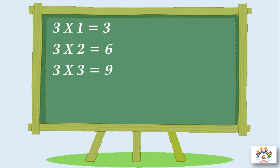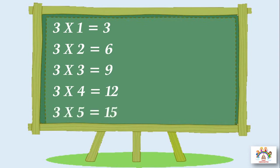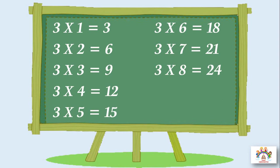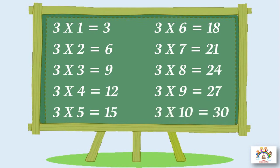3 threes are 9. 3 fours are 12. 3 fives are 15. 3 sixes are 18. 3 sevens are 21, 3 sevens are 21. 3 eights are 24, 3 eights are 24. 3 nines are 27, 3 nines are 27. 3 tens are 30, 3 tens are 30.